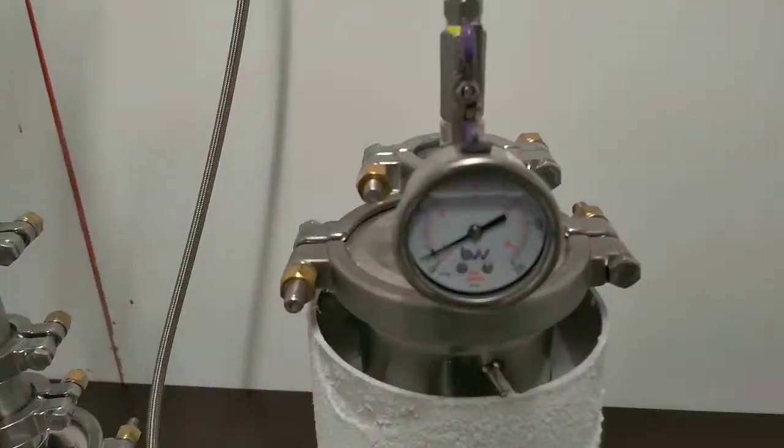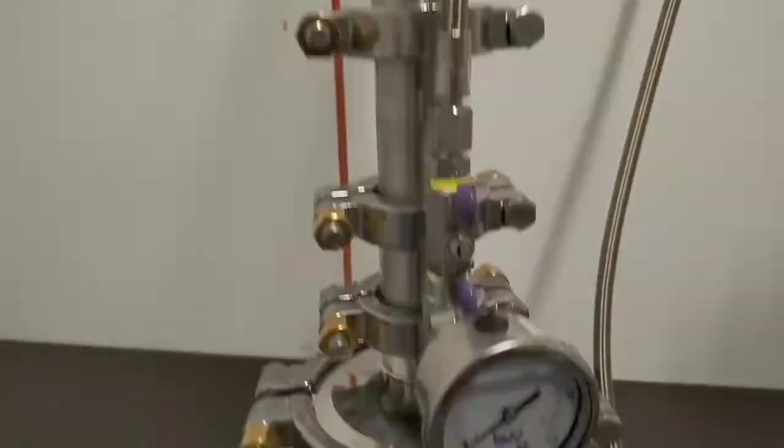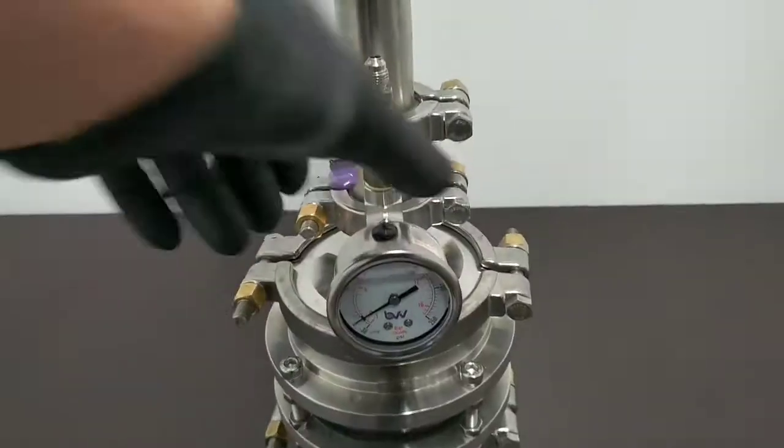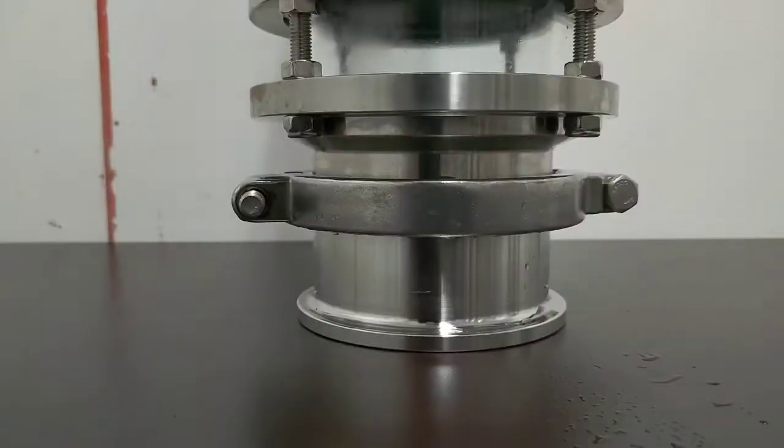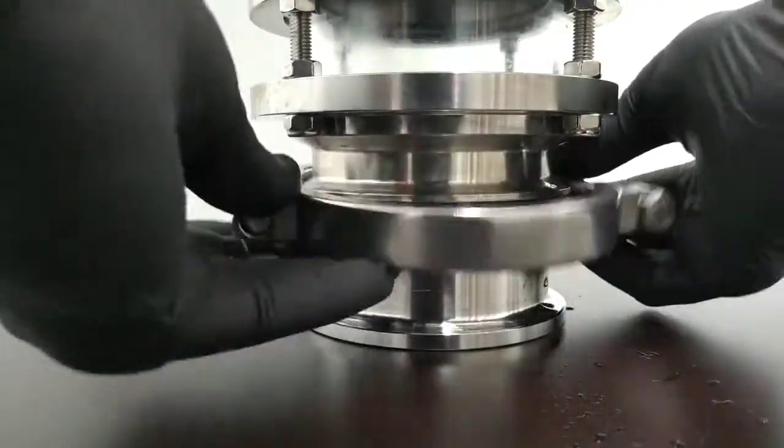Allow the solution to boil until all three gauges on the system read zero PSI, then close off the recovery line valves, remove the line, and vent the collection base to atmosphere.